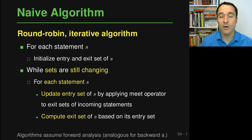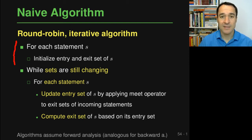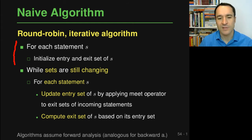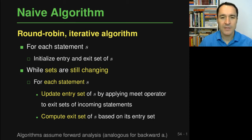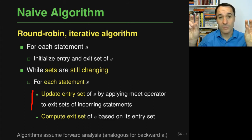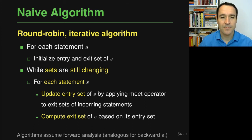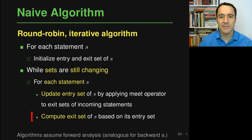The naive algorithm is a simple round-robin iterative algorithm that updates all the statements until nothing changes. It starts by initializing the set associated with every statement using the boundary condition and initialization specified in the data flow problem — for example, every statement may start with the empty set. Then it has a main loop which continues until none of the sets is changing anymore, going through all statements to update the entry set by applying the meet operator to exit sets of incoming statements, then computing the new exit set.